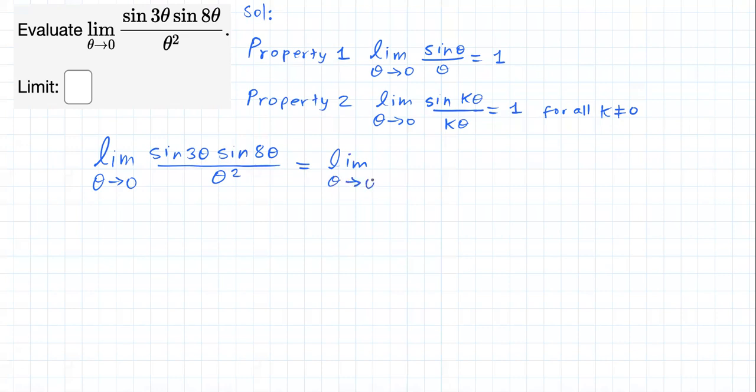Break it down as the limit as theta approaches zero of sine of three theta over theta. Now, I wish I had the number three here so I can apply property two for k equals three, right?